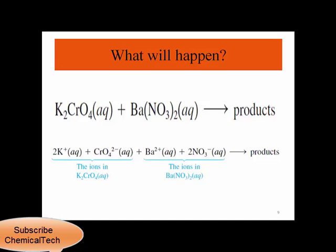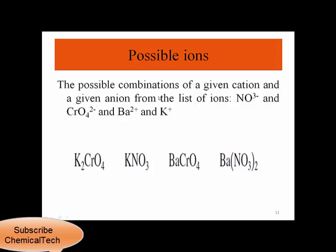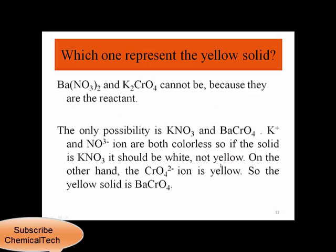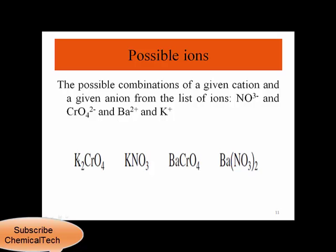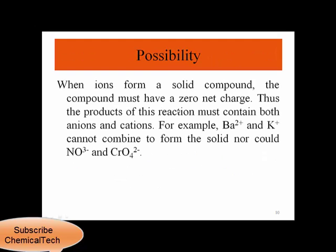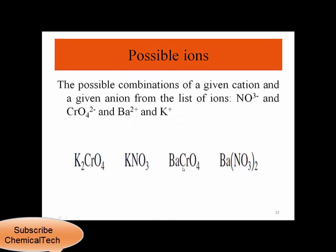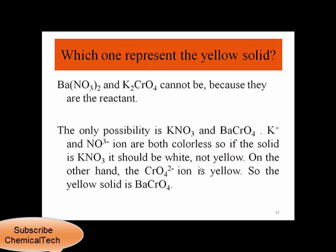So the possible combinations of a cation and an anion from our ion list — nitrate, chromate, barium, and potassium — give us: potassium chromate, potassium nitrate, barium chromate, and barium nitrate. Since barium nitrate and potassium chromate are the reactants, they cannot be products. So the products must be KNO₃ (potassium nitrate) and barium chromate. Now let's see which one forms a solid precipitate.